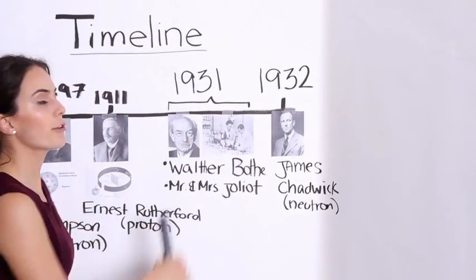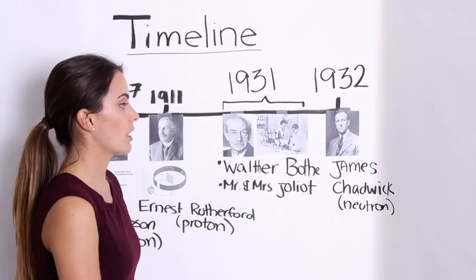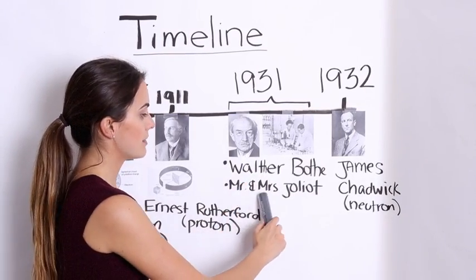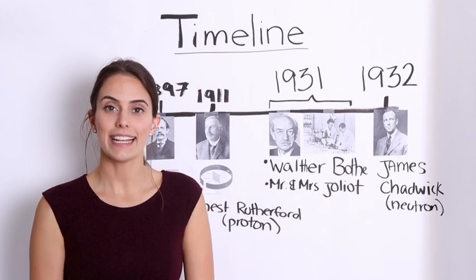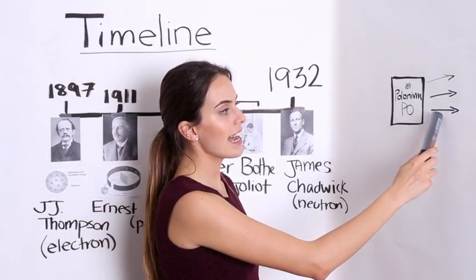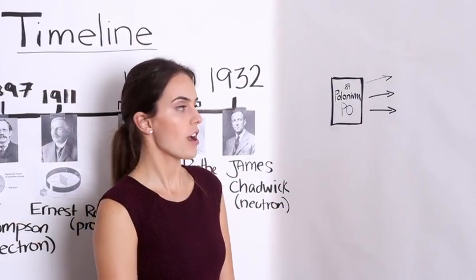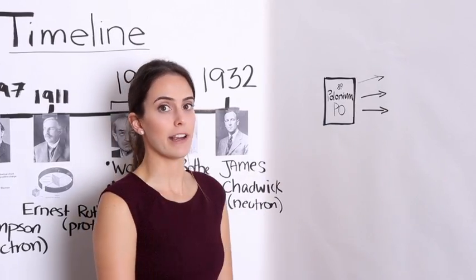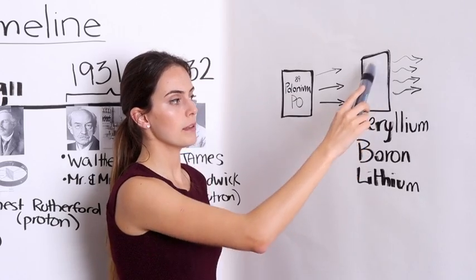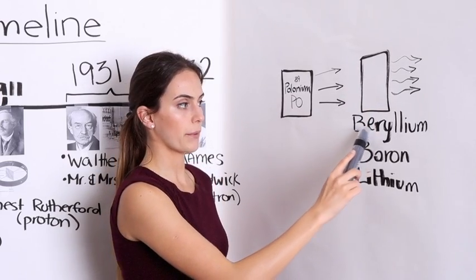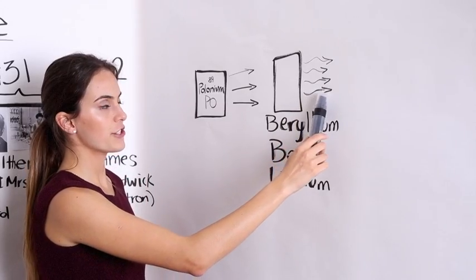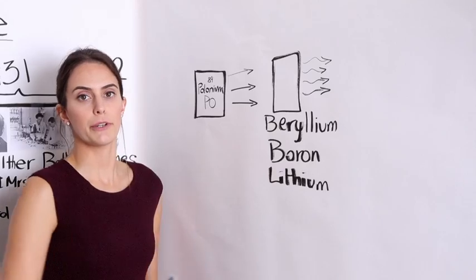Just a year before he discovered the neutron, two experiments were going on by Walter Bothe and Mr. and Mrs. Joliot. In 1931, Walter Bothe discovered that when highly energetic alpha particles are emitted from highly radioactive polonium, and these particles were emitted through elements such as beryllium, boron, or lithium, a very energetic stream of radiation would be produced.